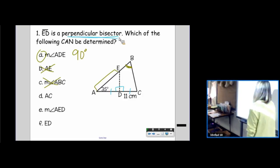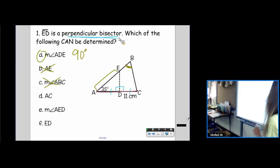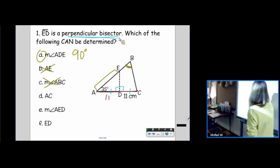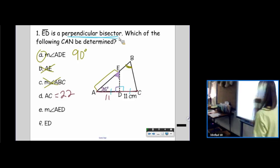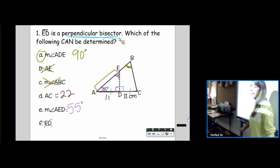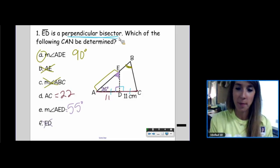AC. The distance from A to C. Now, I couldn't find the distance from A to E, but I can find the distance from A to C because of those tick marks. 11, 11, equals 22. The measure of angle AED. Actually, we can determine the measure of that angle because we know two angles of the three angles. And the distance from E to D. I have no idea how long that perpendicular bisector is, but I sure know what its jobs are.